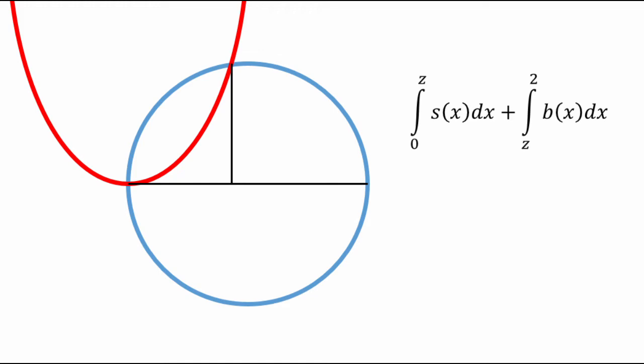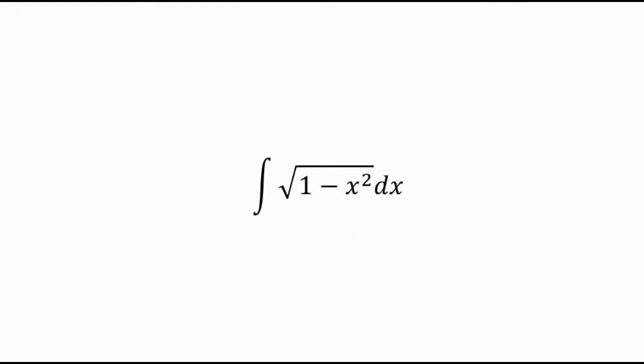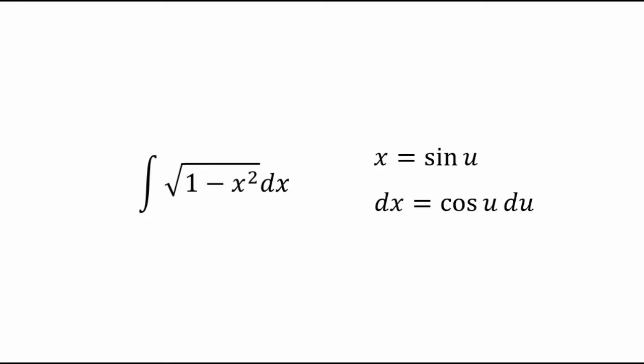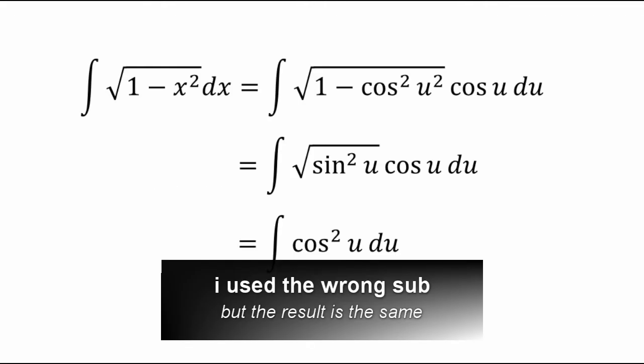Now what this problem boils down to is taking an integral of this function, root 1 minus x squared. As you might expect, we can do this using trig sub. So let x equal sine of u with dx equal to cosine of u du. This way the interior of the square root simplifies to cosine u squared and the total integrand becomes cosine u squared du.